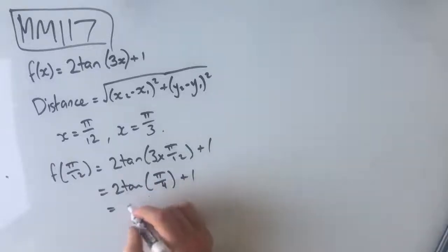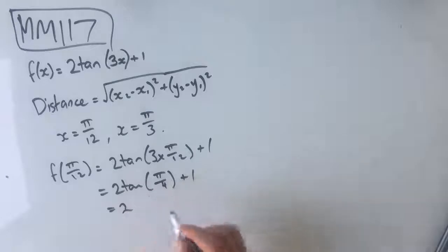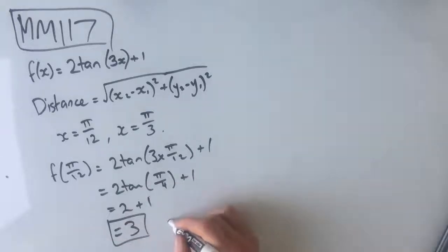Tan of π/4 is 1, which means that f of π/12 equals 2 plus 1, which equals 3. So our first y value is 3, and our first x value corresponds to this, which is π/12.